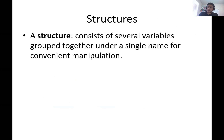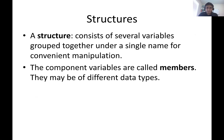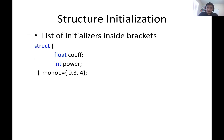A structure consists of multiple variables. Those variables are not necessarily of the same type — they can have different types and are grouped together under a structure name. The variables inside a structure are called members, and they can be of different types.